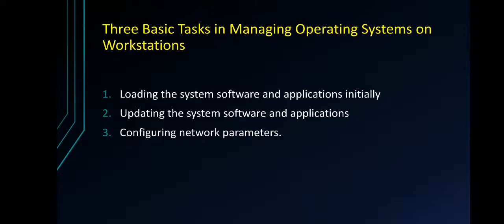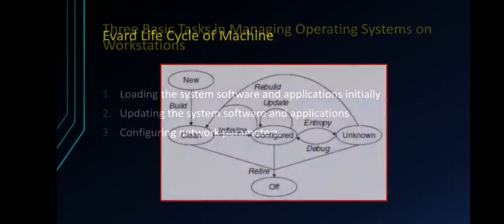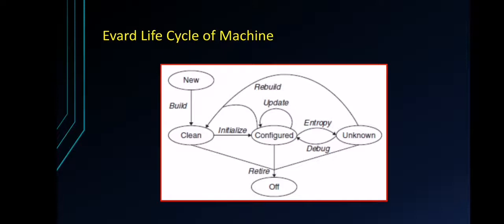Now let us discuss Evard's life cycle of machine. In the machine life cycle, a machine moves between the states: new, clean, configured, unknown, and off. Let's discuss them one by one.